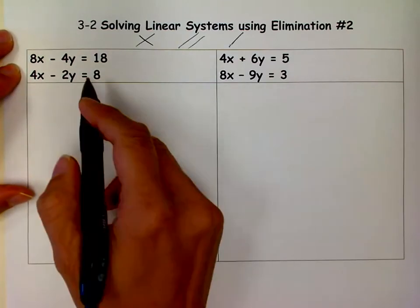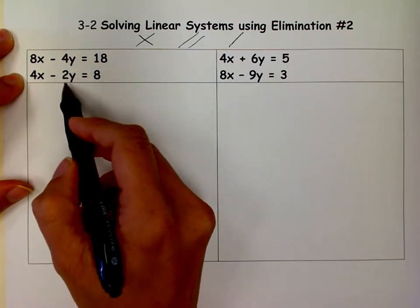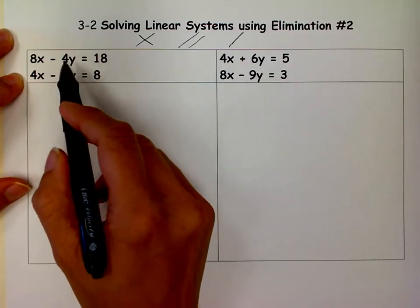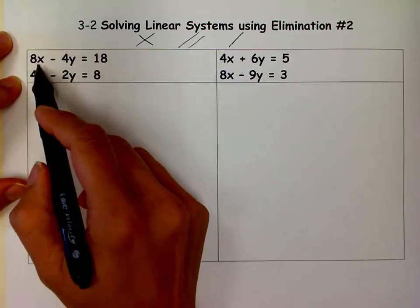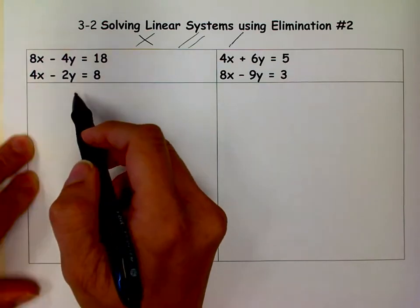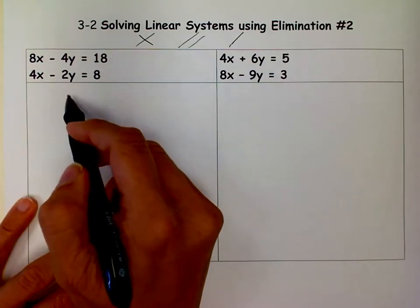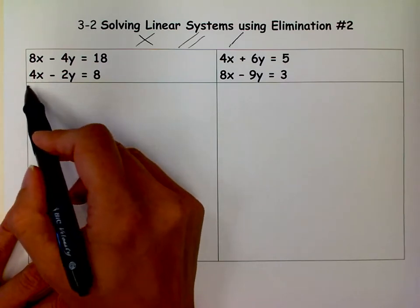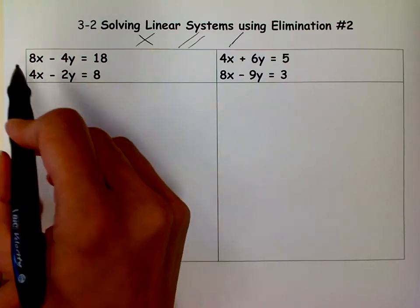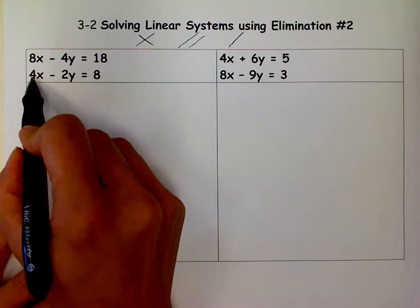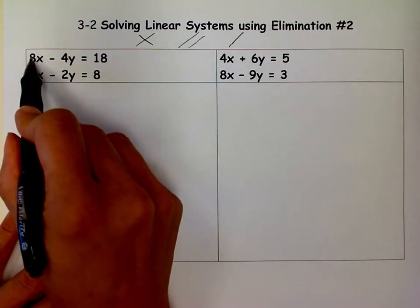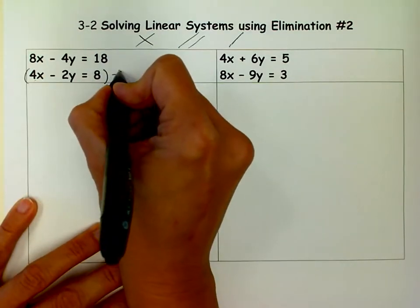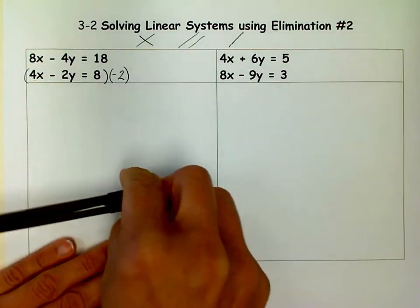Well, these are lined up, but I need coefficients, the numbers in front of the variables, to go bye-bye when I add these. So I need them to be the same. It doesn't matter if I pick x or if I pick y to eliminate. I'm just going to choose x. Sometimes one's easier than the other, but this time they're about the same. So how would I get rid of this x? How would I get this to be negative 8? Because I want it to cancel out with that 8. Well, I'd have to multiply this whole equation by negative 2.